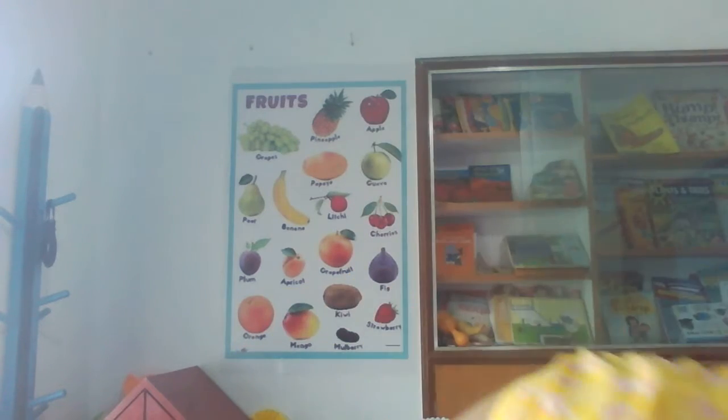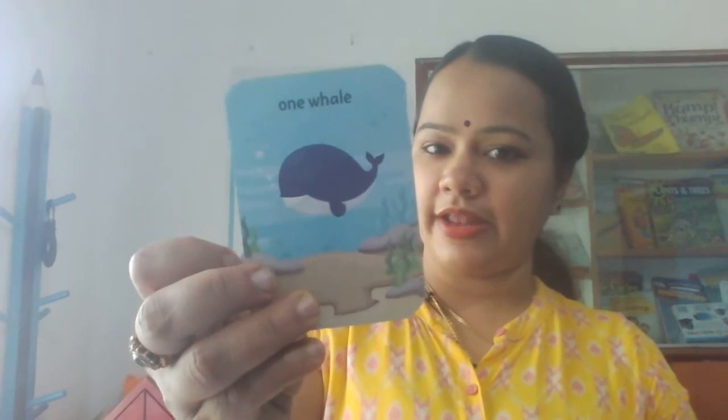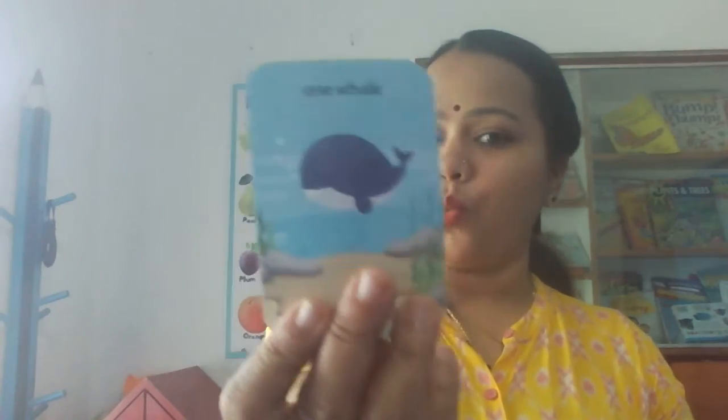Now we will revise the numbers from 1 to 13. So we are going to revise those numbers. See — number 1. This is number 1. Now count how many — there is a whale. Only one whale. One number, one whale.